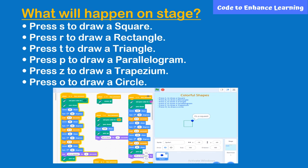In this lesson, we will make different colorful shapes. The programming is to be done in such a way that we press S to draw a square, R to draw a rectangle, similarly T for triangle, P for parallelogram, Z for trapezium, and O for circle.